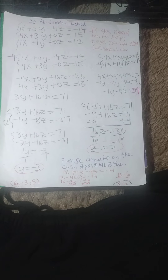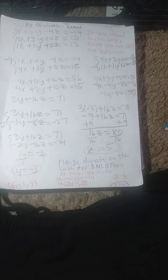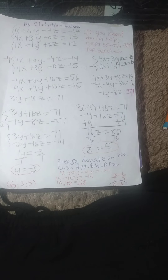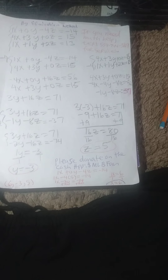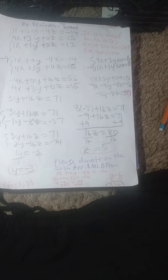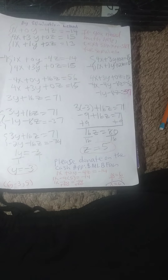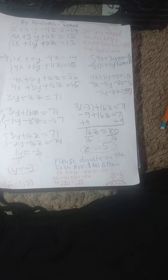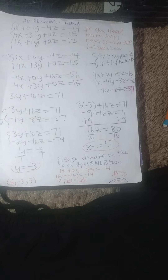We divide both sides by 1 and we obtain y is equal to negative 3. Then we plug y is equal to negative 3 into the first equation to obtain 3 times negative 3 plus 16z is equal to 71. So negative 9 plus 16z is equal to 71; we add 9 to both sides and obtain 16z is equal to 80. Divide both sides by 16, and z equals 5.